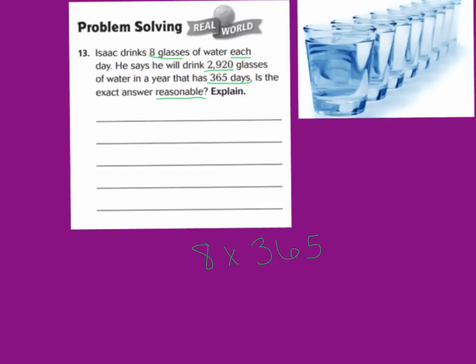Now, this answer is 2,920. We want to know if the exact answer is reasonable. What we're going to do is we're going to find two estimates for 8 times 365 to see if 2,920 is between the two estimates. So remember, we have our 365. I want two numbers that it's in between. I know that 365 is between 300, and it's between 400. So I'm going to take my 300 and my 400, and I'm going to multiply it times my 8. And I will get two estimates.